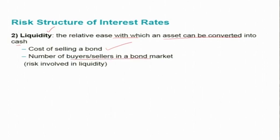Liquidity also depends on the number of buyers and sellers in the bond market. If the market has a large number of buyers and sellers, it is a well-developed, large market, and you can easily sell your bonds when you want — meaning the market is well-developed and also very liquid.